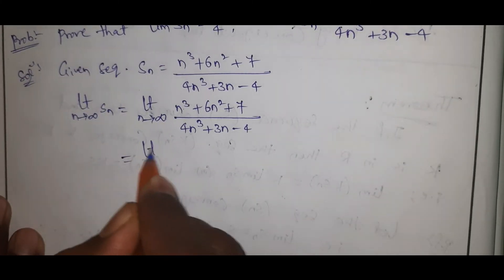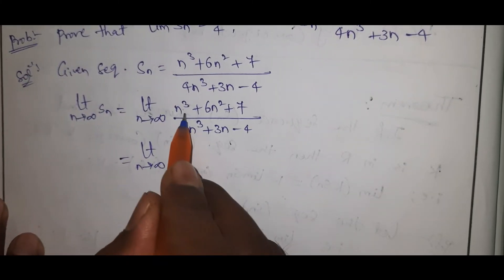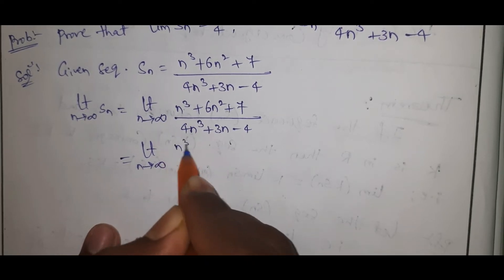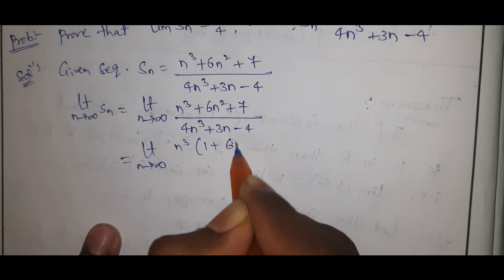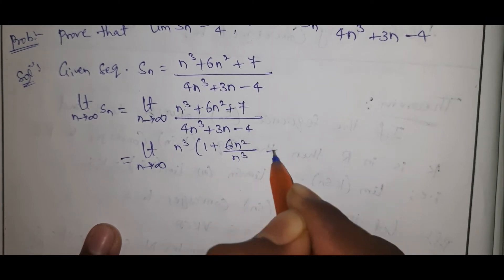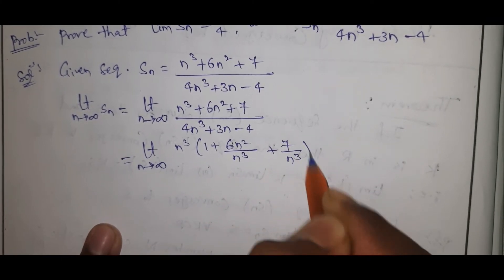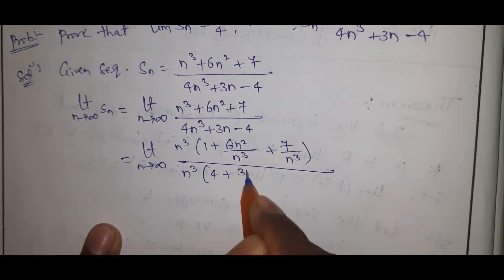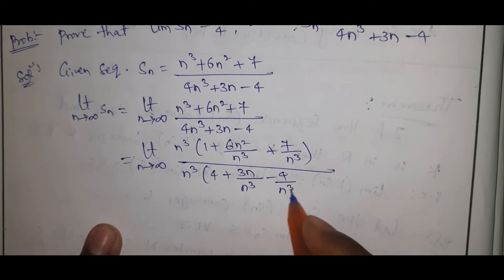That equals limit n tends to infinite. Now see here, n cube is the highest power, so take n cube common: 1 plus 6n square by n cube plus 7 by n cube, over n cube times 4 plus 3n by n cube minus 4 by n cube.